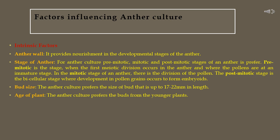Next, we will discuss factors influencing anther culture. The first factor is the anther wall, which is a nourishment layer that develops stages of the anther. Three stages are considered: pre-mitotic, mitotic, and post-mitotic. The pre-mitotic stage is when the first meiotic division occurs and pollens are immature. In the mitotic stage there is division of the pollen. The post-mitotic stage is the bicellular stage where development in pollen grains occurs to form embryoids. Bud size of 17 to 20 mm in length and the age of the plant also influence anther culture.